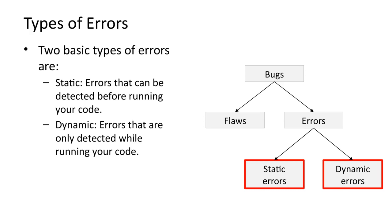For compiled languages, static errors are also referred to as compile time errors. This is because they can be detected while compiling your code. Dynamic errors are only detected while your code is running. They are sometimes also referred to as runtime errors.